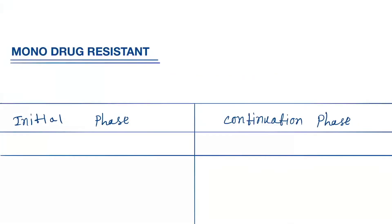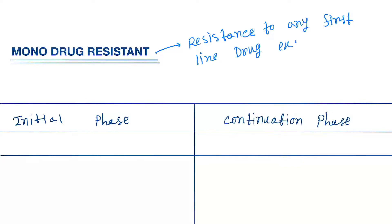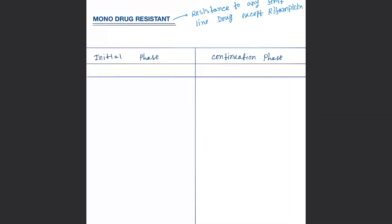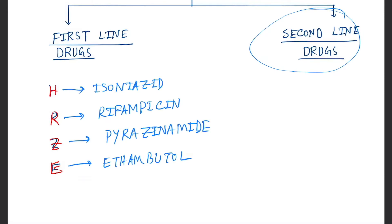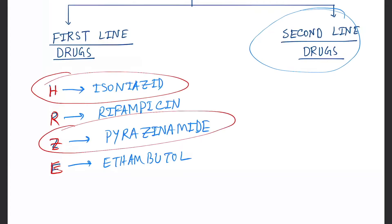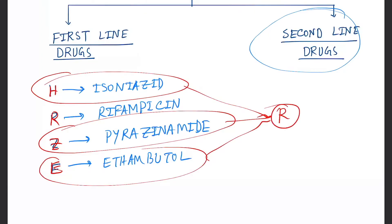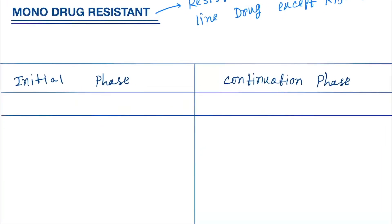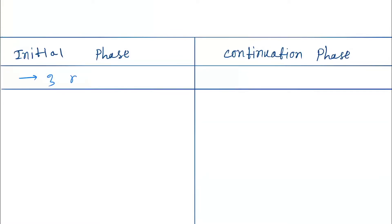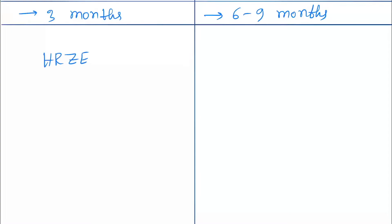The first type is monodrug resistant TB, which shows resistance to any first-line drug except rifampicin — so it can be isoniazid, pyrazinamide, or ethambutol. In the management, the initial phase occurs for three months and the continuation phase for six to nine months.